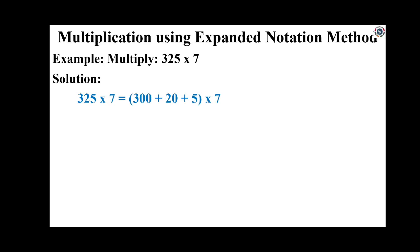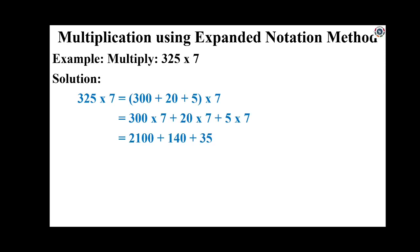Now multiply 300 plus 20 plus 5 by 7: 300 into 7, plus 20 into 7, plus 5 into 7. That gives 2100 plus 140 plus 35. So 2100 plus 140 plus 35 which is equal to 2275.